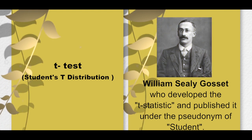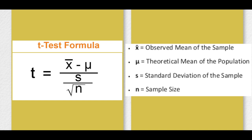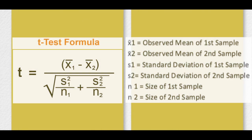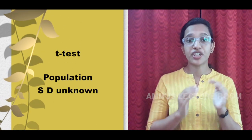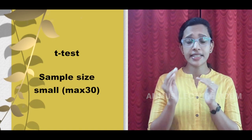This is the Student's t-distribution. In the one-sample t-test, the equation is: t is equal to observed mean of the sample minus theoretical mean of the population, divided by standard deviation of the sample divided by root of sample size. In the two-sample test, t is equal to observed mean of first sample minus observed mean of second sample, divided by the root of standard deviation of first sample divided by size of first sample plus standard deviation of second sample divided by size of second sample. T-test is a parametric test and we use t-test when the population standard deviation is unknown, that is when sample size is small — maximum 30.